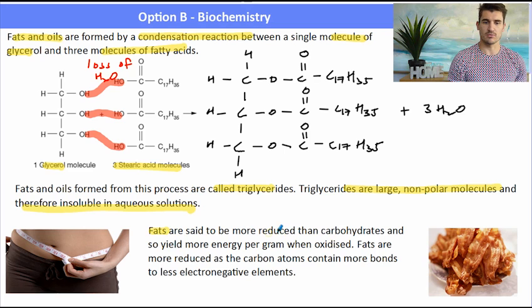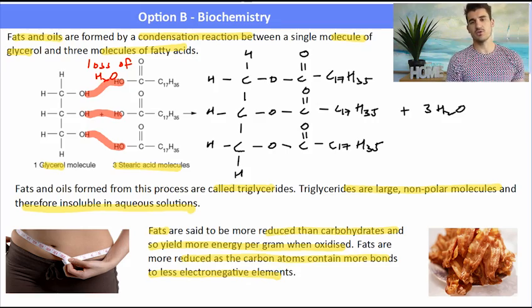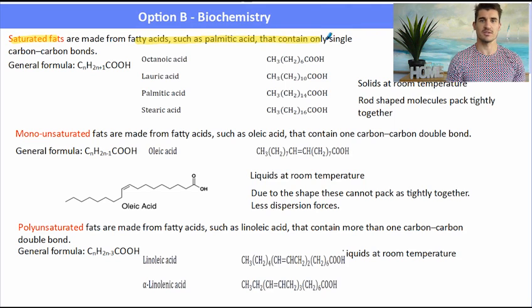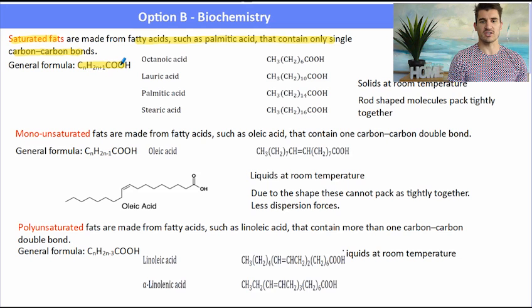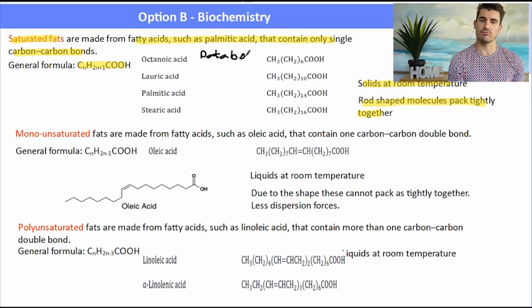Triglycerides are large, non-polar, and insoluble in aqueous solutions. We describe that as being a fat, and fats yield more energy per gram than carbohydrates and proteins. That's because the carbons are more reduced, which means there are fewer connections to more electronegative elements — there are more carbon-to-hydrogen bonds. A saturated fat or saturated fatty acid contains only single carbon-to-carbon bonds. Generally they're solids at room temperature and they can pack together quite tightly because they're rod-shaped.